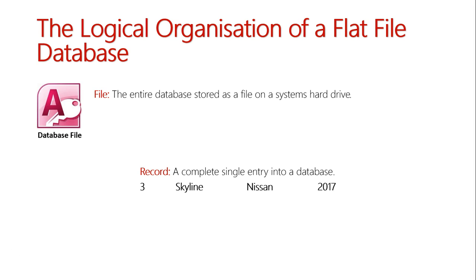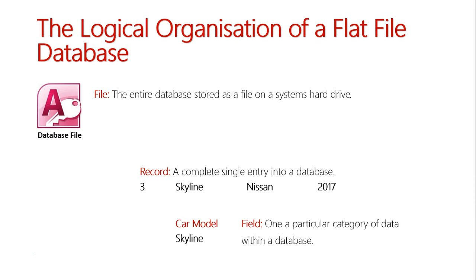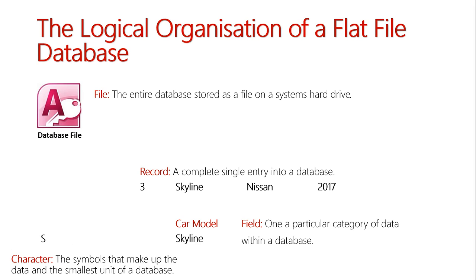So here it would be record three: Skyline, Nissan, 2017. Now, Skyline on its own is an example of a field — specifically, the car model field — and that is one particular category of data within this database. And then, if we just grab the 'S' on its own, that is an example of a character. They are all the symbols used in the database to help make up our data.